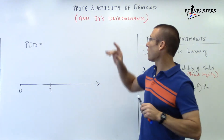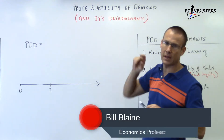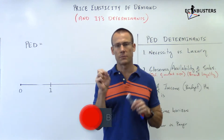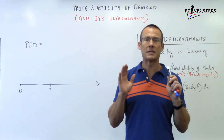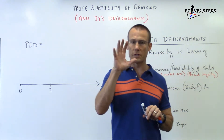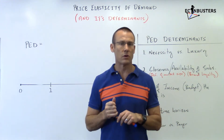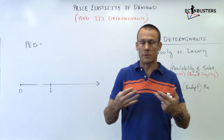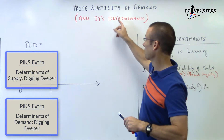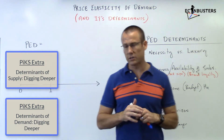Welcome back. We are on elasticity, specifically price elasticity of demand, and in this video we are looking at its determinants. Anytime you hear the word 'determinants' in an economics class, perk up — that's important stuff. We've already talked about determinants of demand and determinants of supply. Now we're talking about determinants of price elasticity of demand. You need to know them.